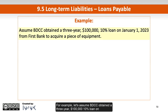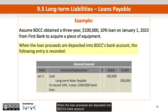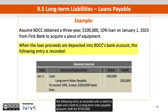For example, let's assume BDCC obtained a three-year, $100,000, 10% loan on January 1, 2023, from First Bank to acquire a piece of equipment. When the loan proceeds are deposited into BDCC's bank account, the following entry is recorded with a debit to cash and credit to long-term note payable account, both for $100,000.